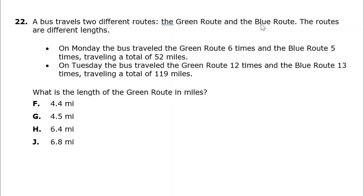On Monday the bus travels the green route six times and the blue route five times, traveling a total of 52 miles. On Tuesday the bus traveled the green route 12 times and the blue route 13 times, traveling a total of 119 miles. What is the length of the green route in miles?